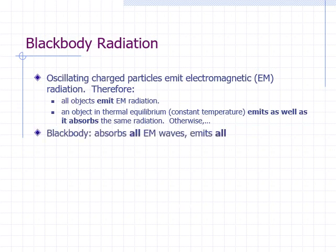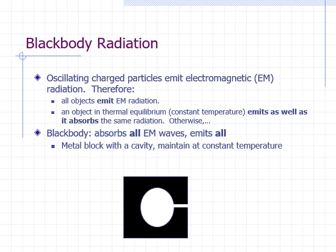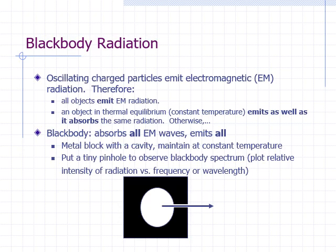A blackbody is an object that absorbs all radiation and re-radiates all radiation, regardless of wavelength. To examine the radiation emitted by a blackbody, we use a metal block with a cavity. We keep the block at constant temperature. Then we examine a sample of the EM waves bouncing around inside the cavity through a pinhole. A plot of intensity of the radiation versus wavelength or frequency is called the blackbody spectrum.